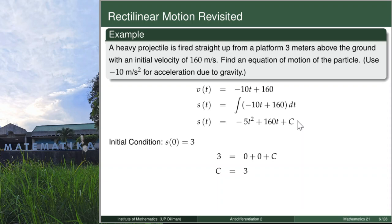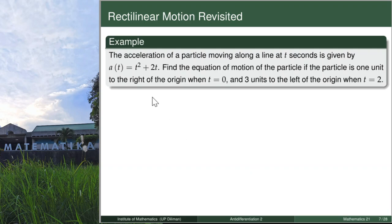Therefore, substituting c = 3, we get the position function of our object, and that is the final answer. Now let's go to another example. In this case, the acceleration is given again as a polynomial. We want to find the equation of motion of the particle if the particle is 1 unit to the right of the origin when t = 0, and 3 units to the left of the origin when t = 2. Again, from acceleration, we want to get the position function. We will antidifferentiate two times, and since we antidifferentiate two times, we also need two initial conditions.